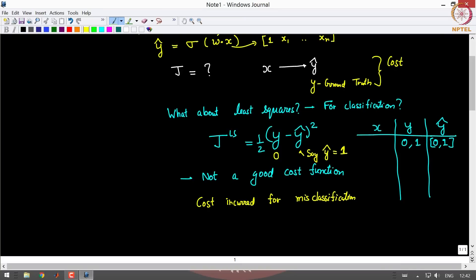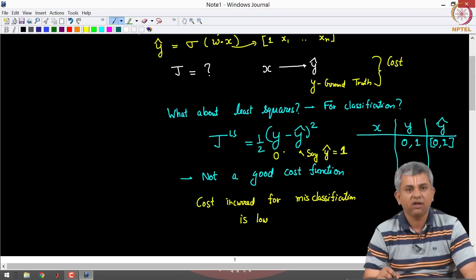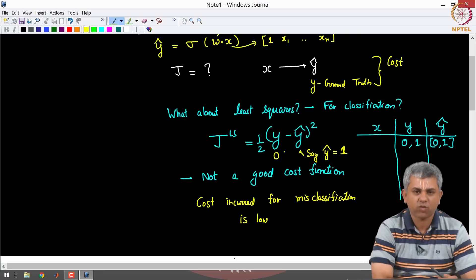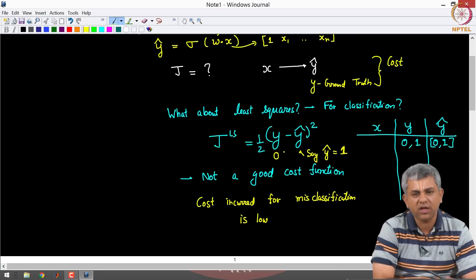The cost that you incur for misclassification, that is when Y is 0 if you say Y hat is 1 or close to 1, let's say 0.99, we saw in the previous video that Y hat gives an estimate of probability that the prediction is actually or the class is actually 1. So when we want to predict something as clear as a classification and you give a misclassification, the cost incurred for that is actually very low. That is we do not penalize this cost high enough. Even though there is a penalty it is not high enough. So because of that, that is one of the reasons why the usual least square cost function is a bad cost function for classification.